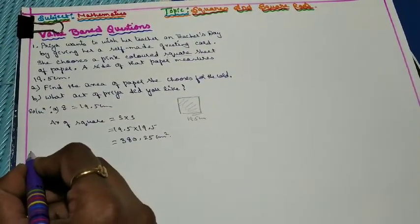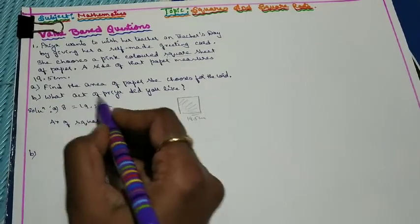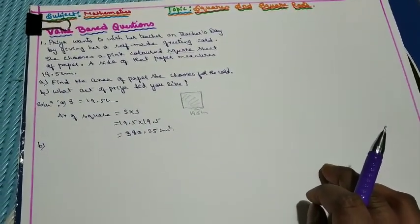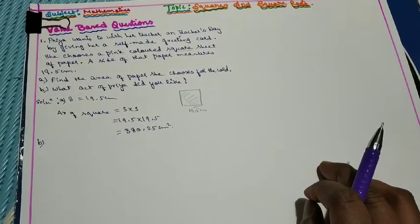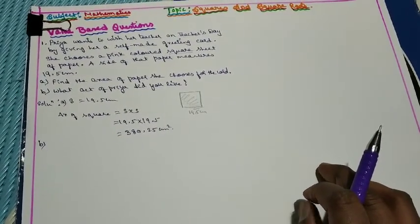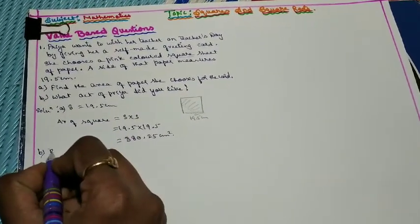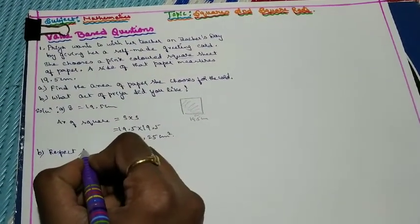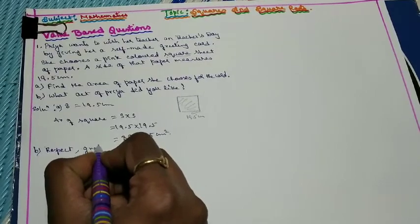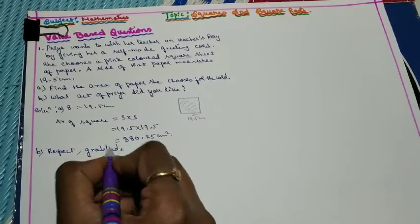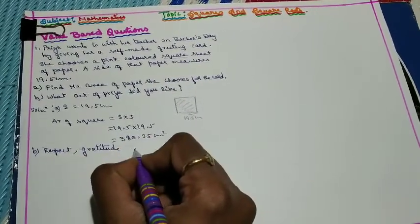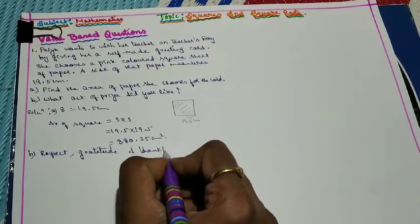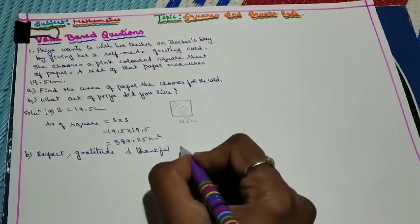Now moving to sub-question B: what act of Priya did you like? We can write: respect towards the teacher, gratitude towards the teacher, and thankful nature.